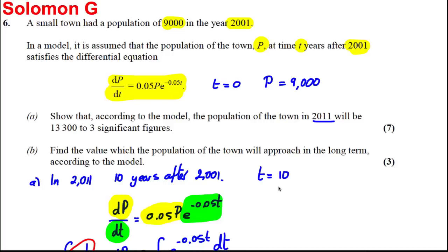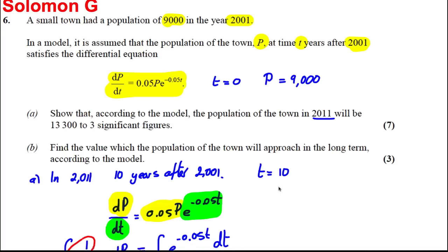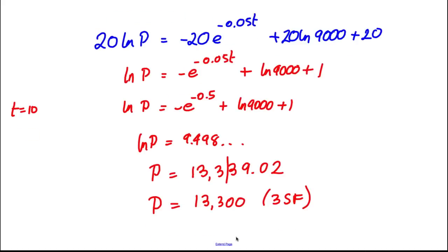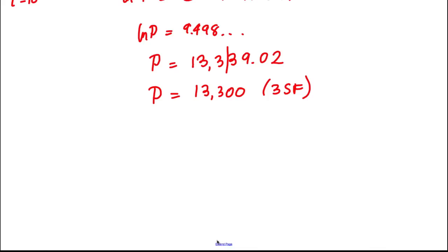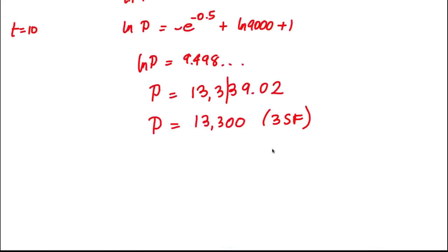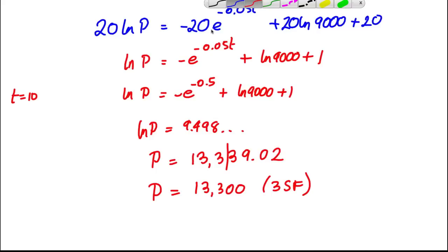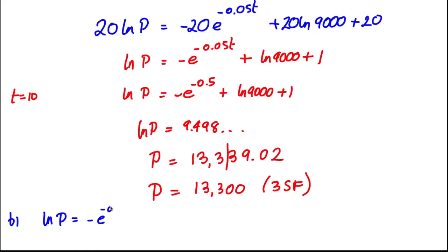For part B, find the value which the population of the town will approach in the long term according to the model. Our equation from the model is: ln P is equal to negative e to the negative 0.05T plus ln 9000 plus 1.